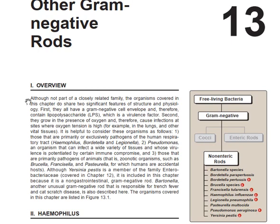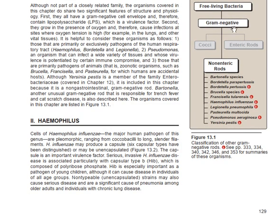Here we are going to see the non-enterogram-negative rod. We start with the classification where we have the free-living bacteria, then the gram-negative bacteria. Gram-negative bacteria consists of the cocci, the non-enterograms, and the enterograms that we have already seen in previous tutorials. If you have not done the tutorial yet, pause the video and go back.